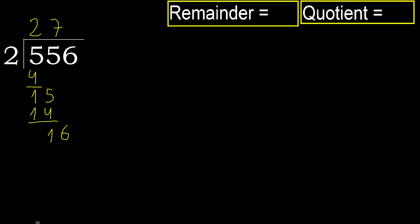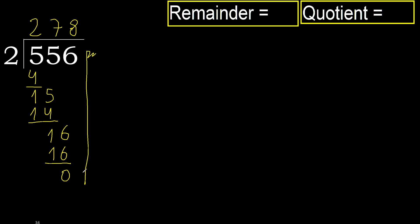16. 2 multiplied by 8 is 16 — 16 is not greater. Subtract. Next: there is no number, therefore finished.